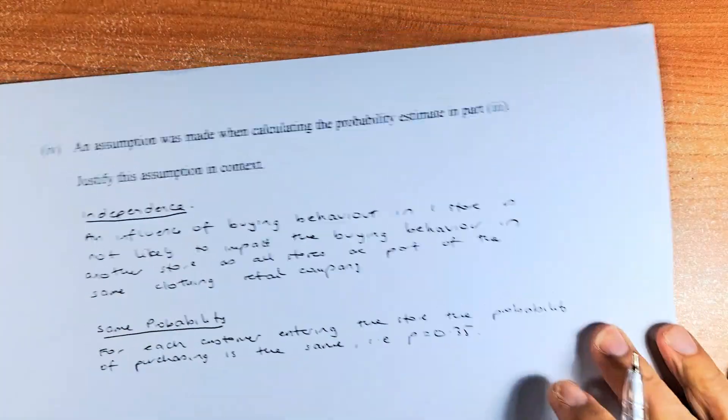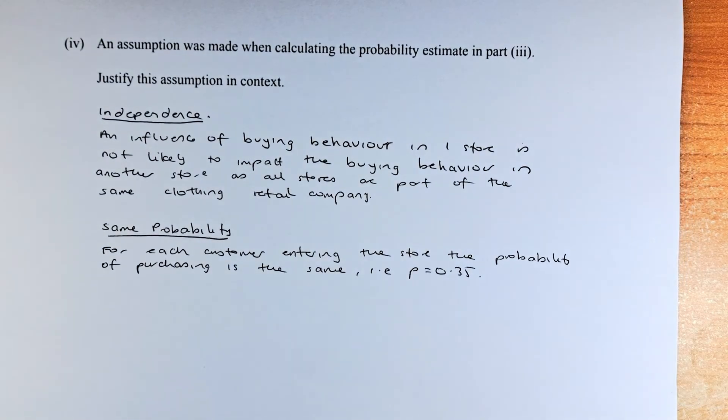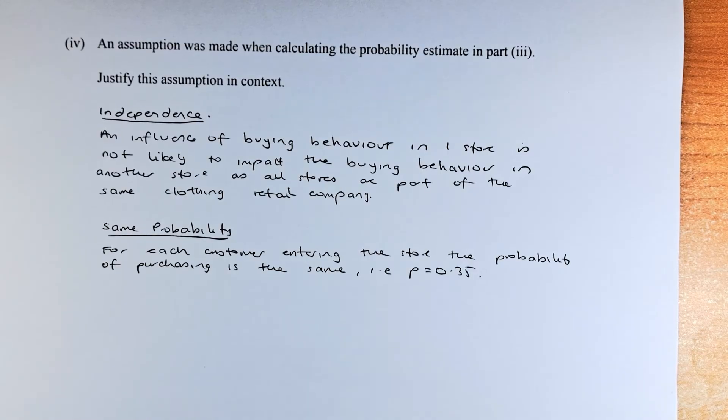Now we shall look at the last question, the assumption. We're going to repeat what we have done before. So the question asks you: An assumption was made when calculating the probability in part 3. Justify the assumption in context.